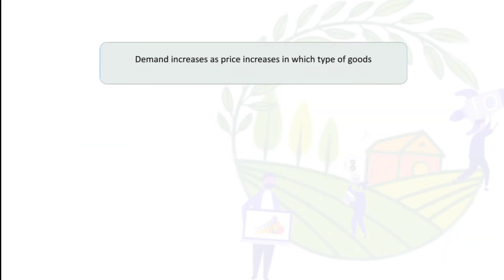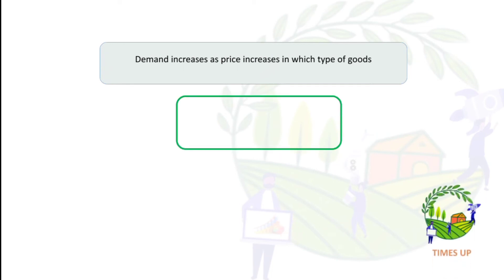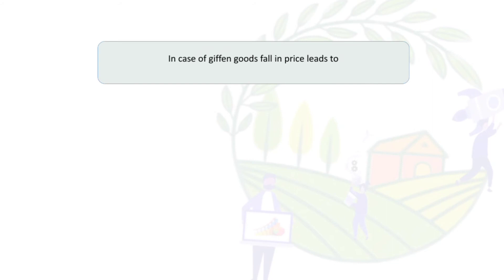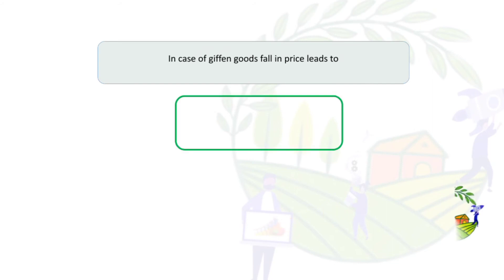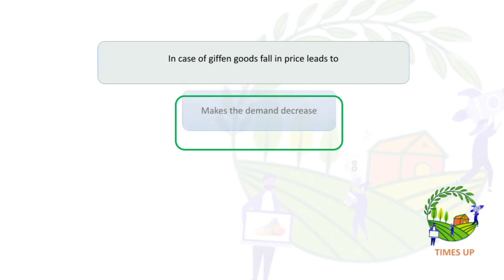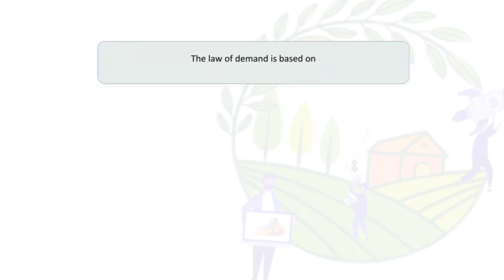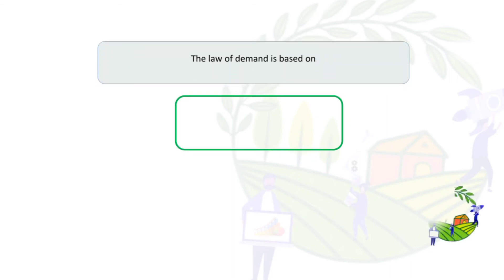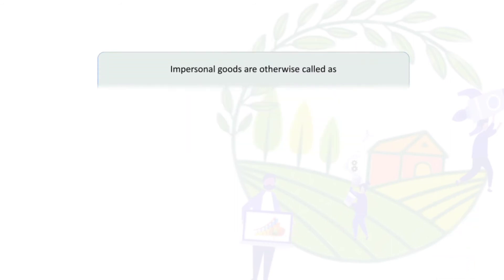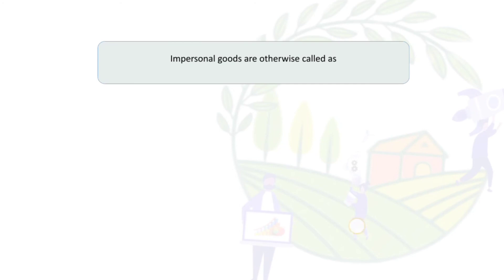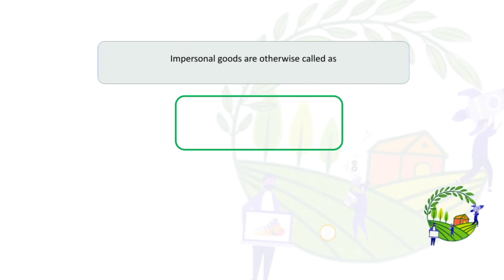In which type of goods does demand increase as price increases? In Giffen goods. In the case of Giffen goods, a fall in price leads to a decrease in demand. The law of demand is based on consumer surplus. Inferior goods are otherwise called demerit goods.